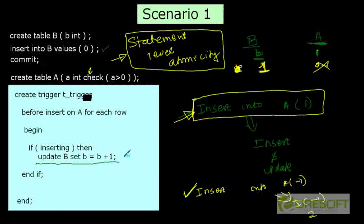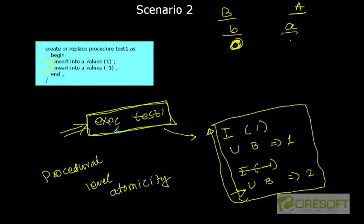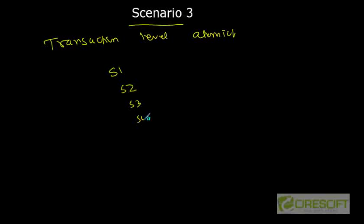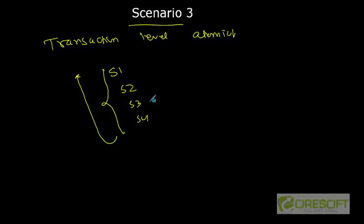So we started with statement-level atomicity, where one statement must be successful. Then we moved to procedural-level atomicity, where we combine a couple of things. Then comes transaction-level atomicity, which is scenario three, where SQL statements one, two, three, four all together create a transaction — if you commit, everything is committed; if you roll back, everything is rolled back. Oracle implements all three sorts of atomicity: statement-level, procedural-level, and transaction-level atomicity. Thank you.